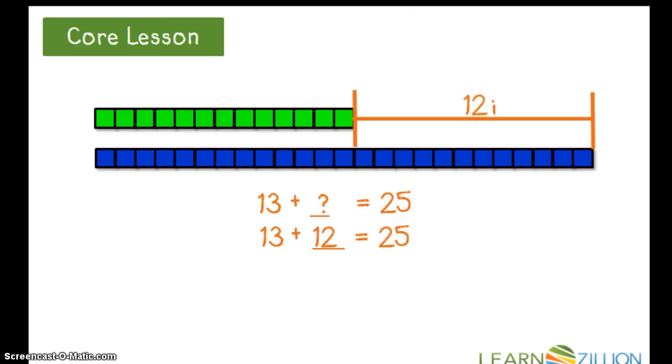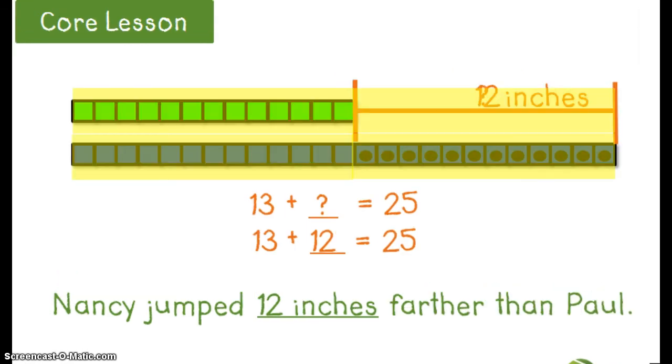I can count on from 13 to 25 and determine that Nancy jumped 12 inches farther than Paul.